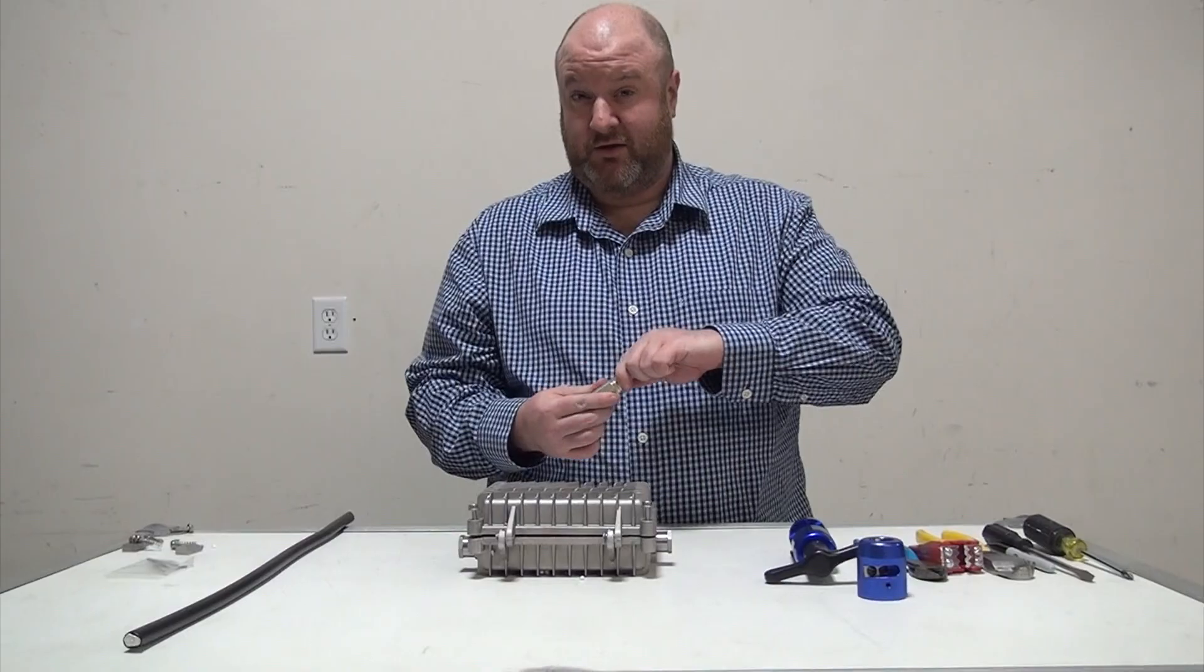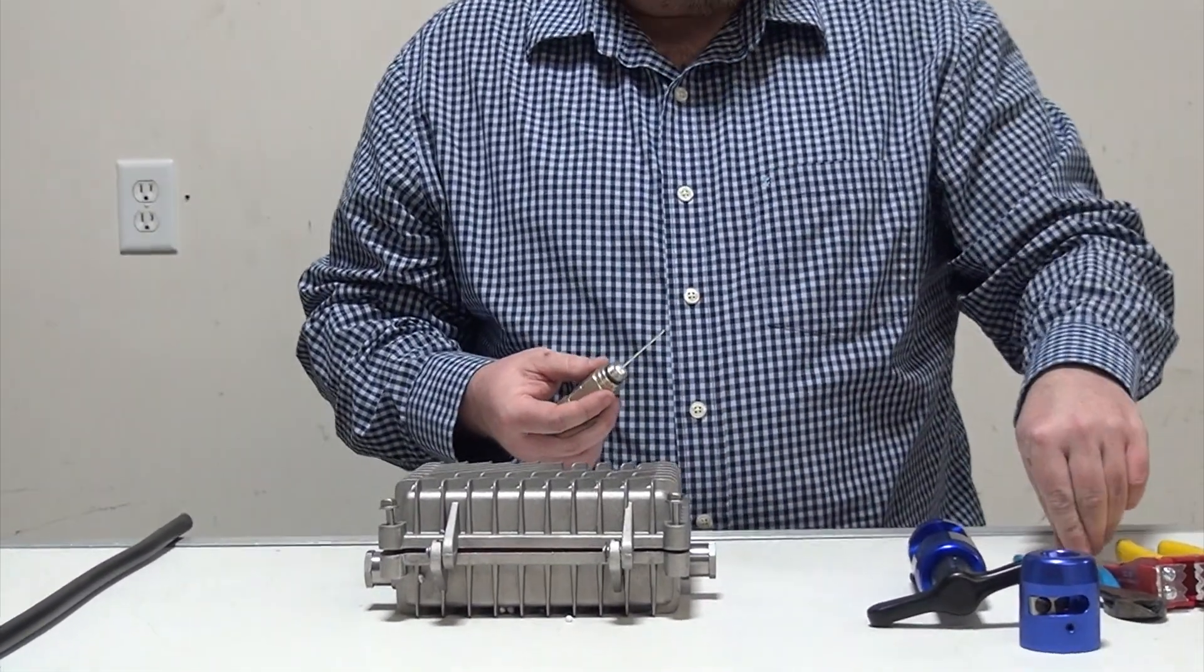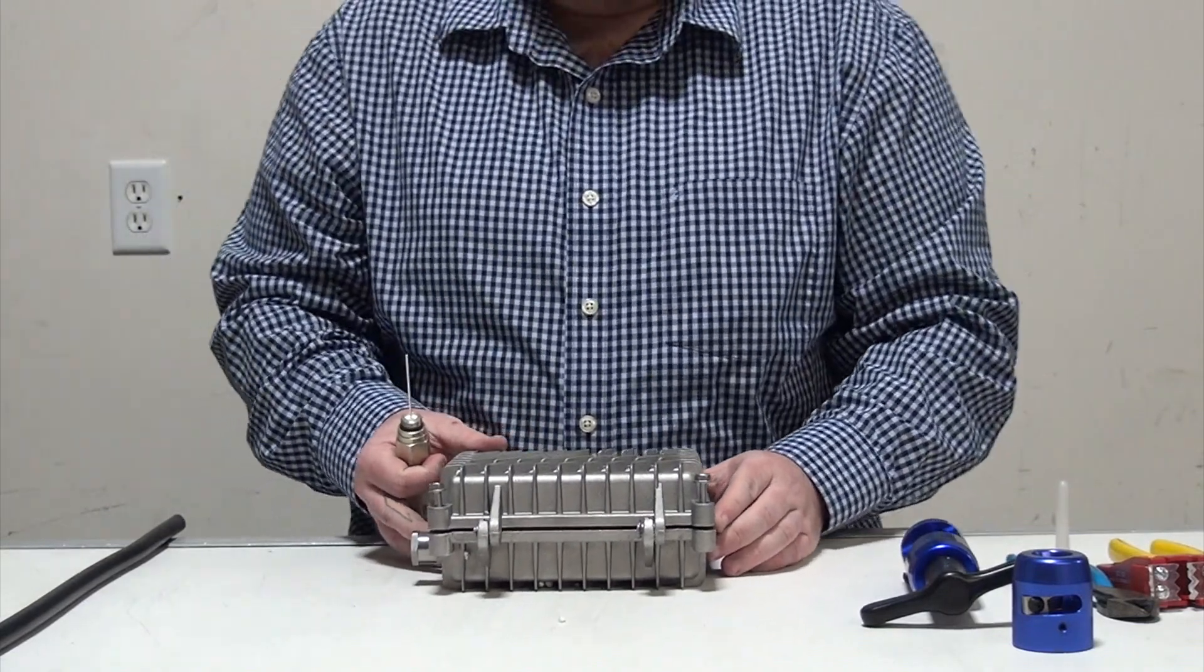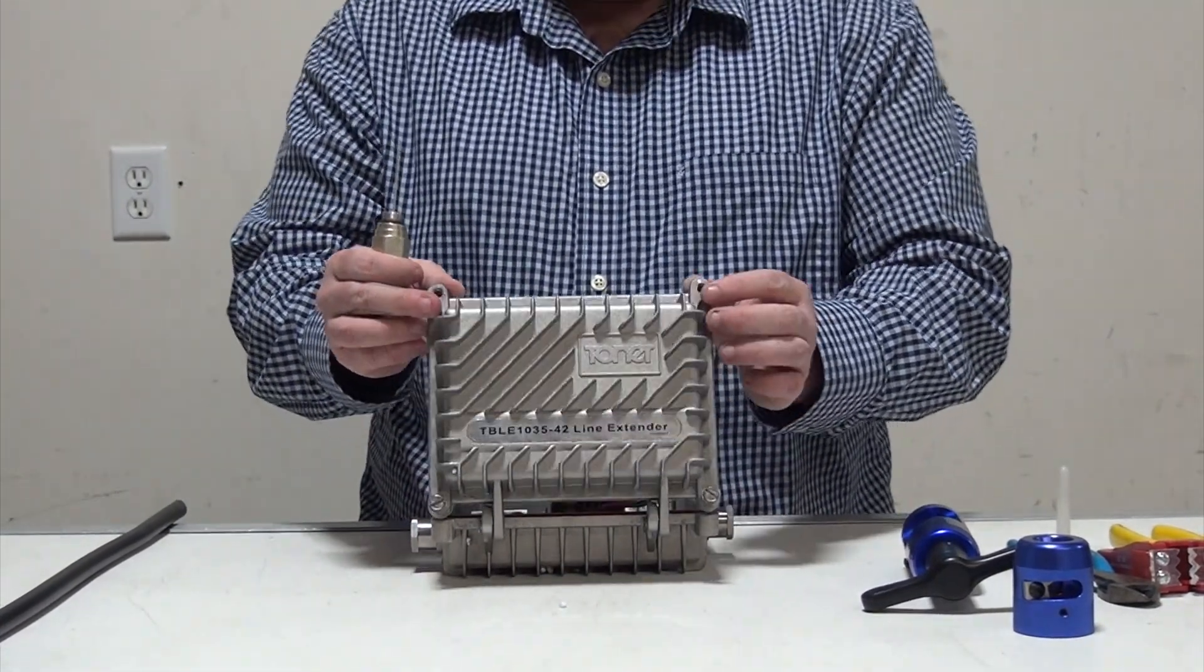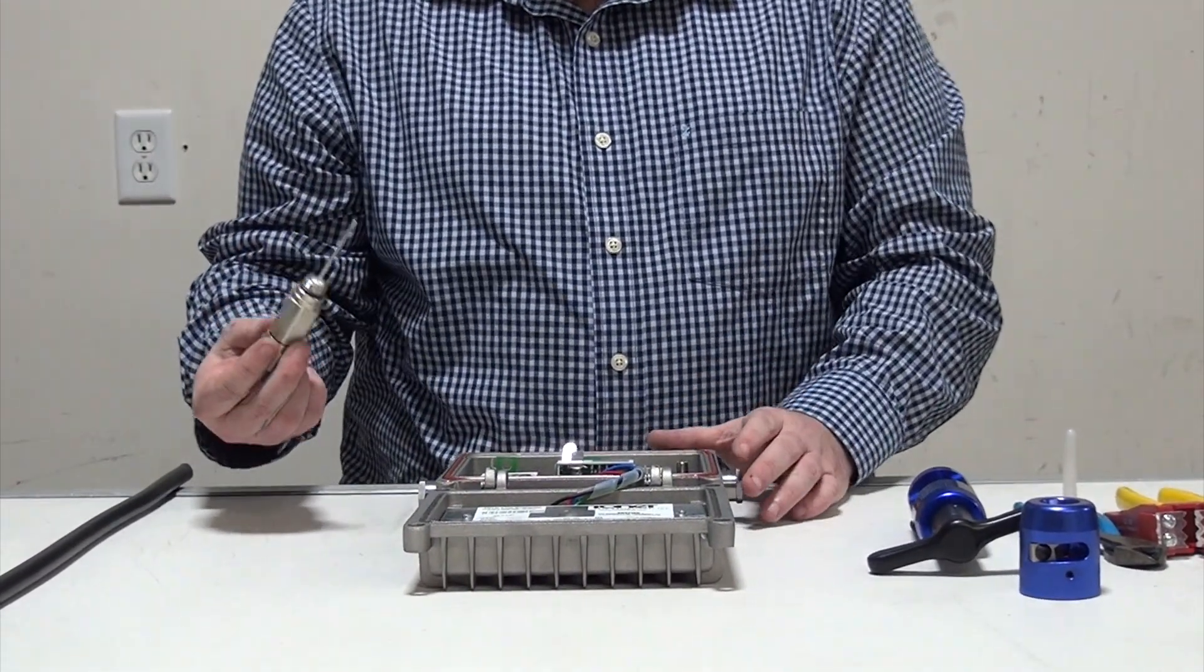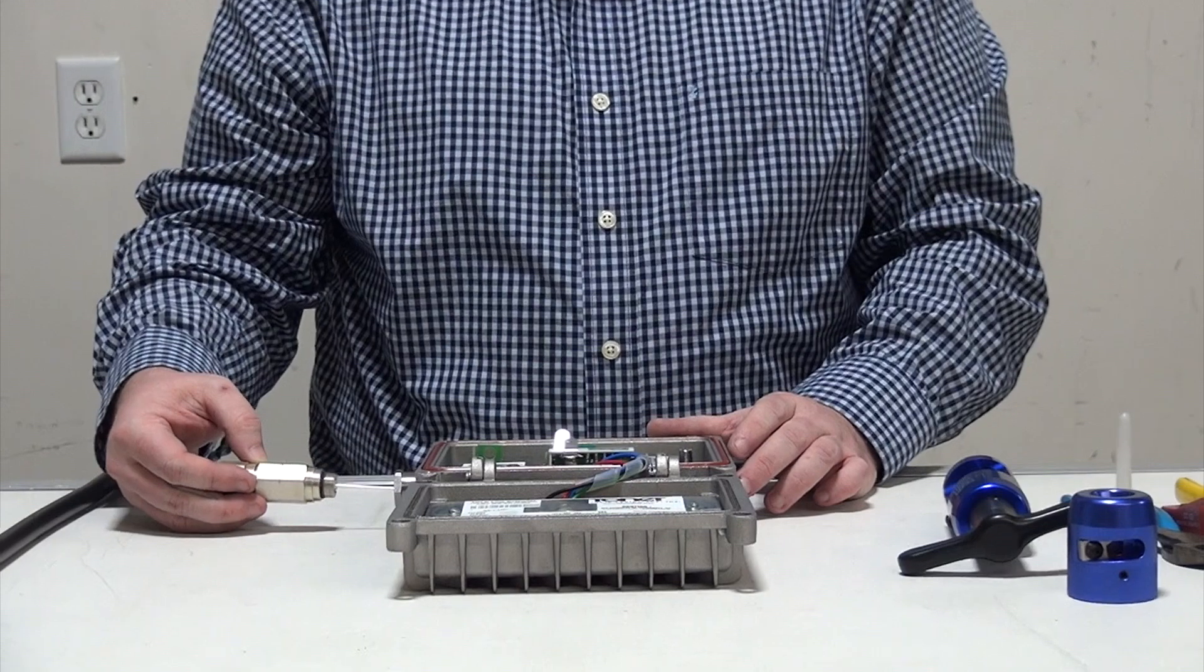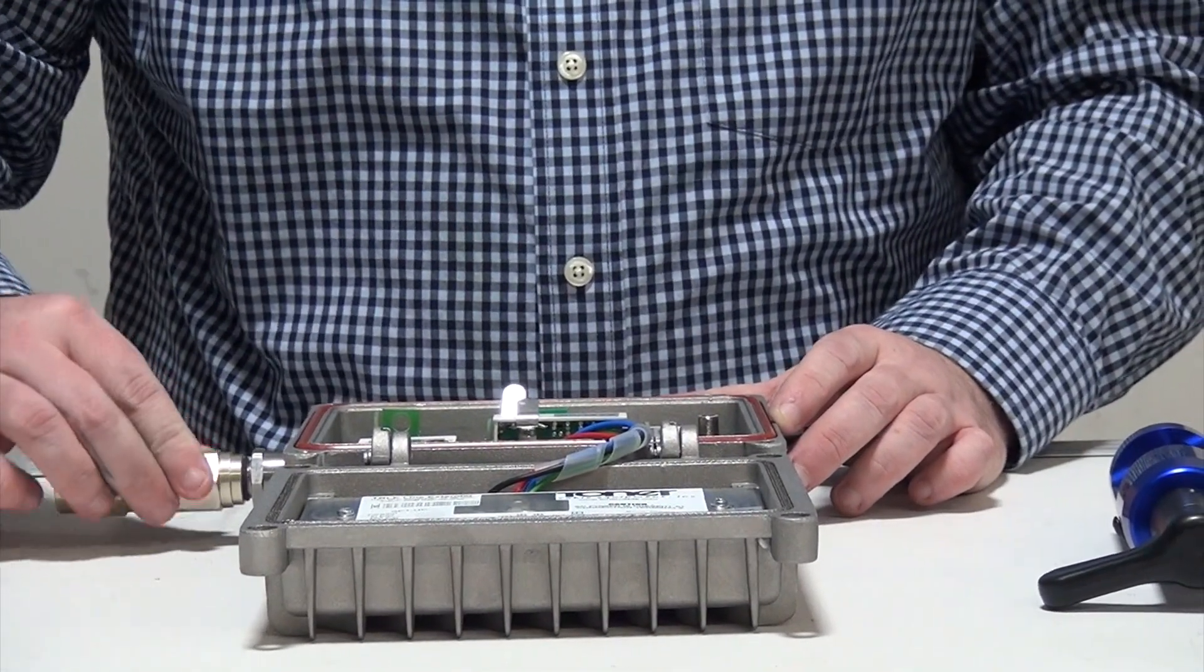So the first thing we're going to do is take the plastic protective cap off of the pin. Next, we're going to open the lid of our TBLE line extender, and we're going to insert the connector pin first into the side of the TBLE and screw it into place.